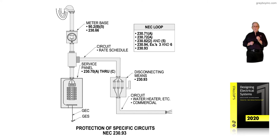So, what is 230.93 illustrating in figure 6-50? It's illustrating a tap ahead of the main with the tap conductors being protected so that the load side it's supplying — the conductors and equipment — is protected in accordance with the NEC.